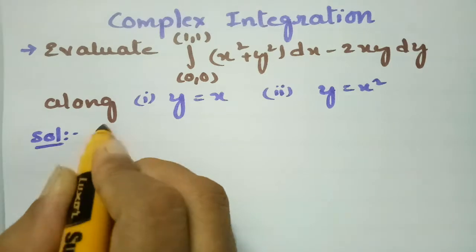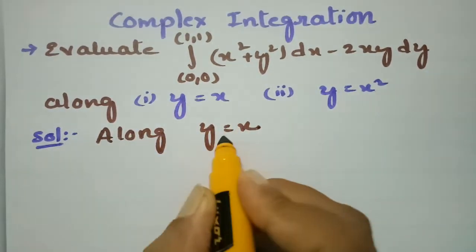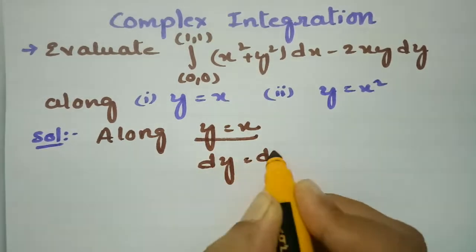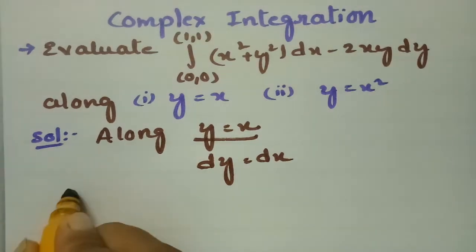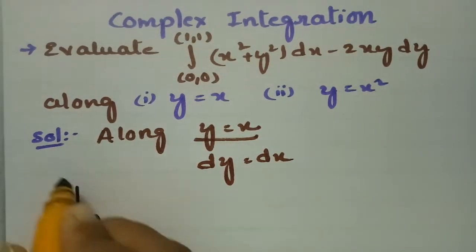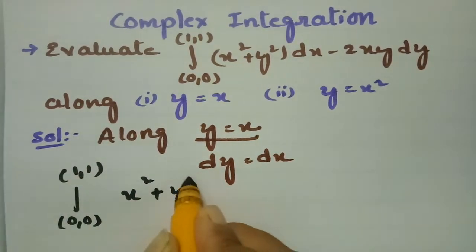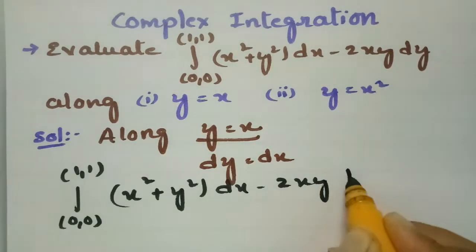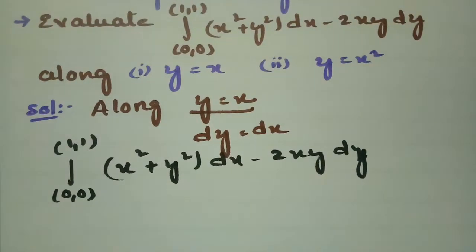First of all, along y = x. Along y = x, dy will be equal to dx. The integral given is: integral from 0 to 1 of (x² + y²)dx minus 2xy dy.